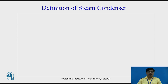Now let us see what is the definition of steam condenser. Before we study the definition of steam condenser, as we know that in case of steam power plant, we use the Rankine cycle. And in Rankine cycle, we have four components: boiler, steam turbine, condenser, and feed pump.